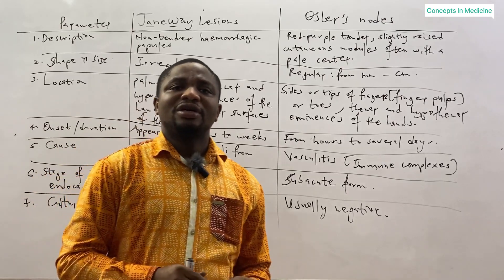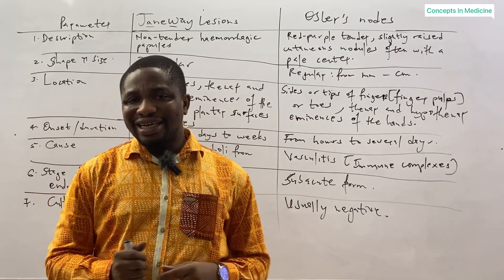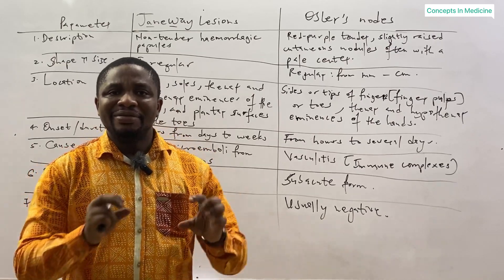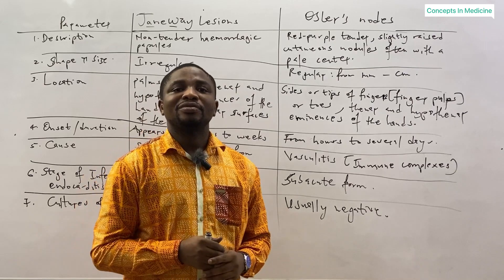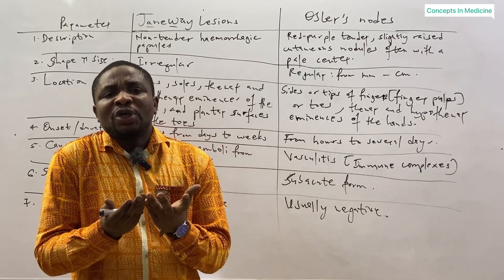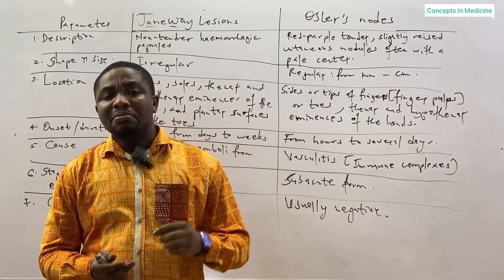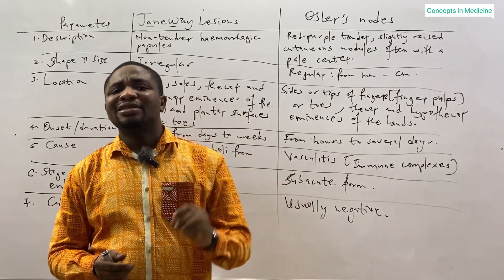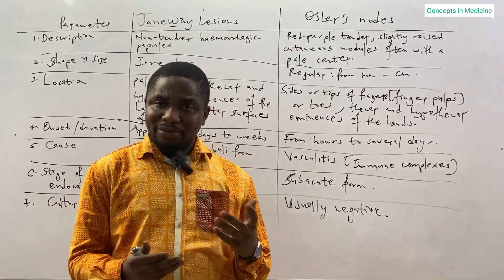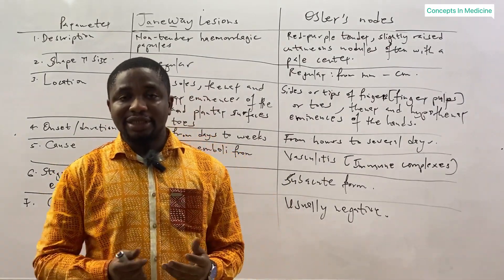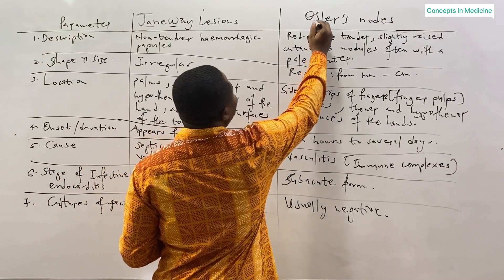Now let's talk about the Osler's nodes. Osler's nodes are different from Janeway lesions — they are tender, and their color is red-purple. In addition to that, they are usually slightly elevated above the skin, and most often they will have a pale center. Their size is regular, varying from several millimeters to centimeters.